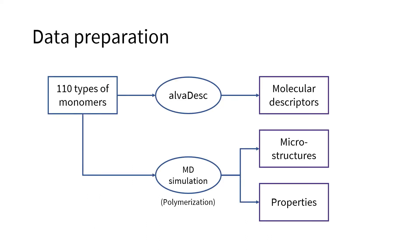To this end, data is collected for 110 types of molecules in total. Firstly, over 3000 molecular level descriptors are generated for each of them in a cheminformatics software. Then, polymerization is simulated using molecular dynamics, from which we obtain the microstructures and properties of the resulting polymers.